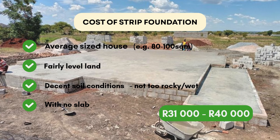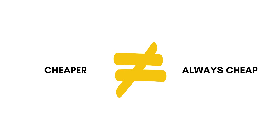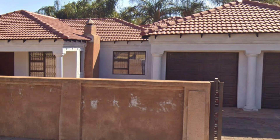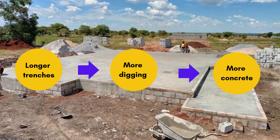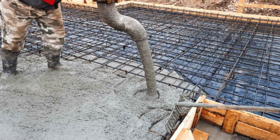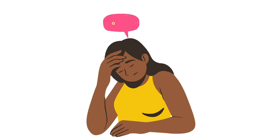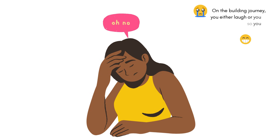With a strip foundation, if your soil is good and your house is light and not too big, it can be all you need. But cheaper doesn't always mean cheap. A strip foundation can become expensive depending on the size of your house — a larger house means longer trenches, more digging, and more concrete. If the soil is unstable you might need to dig deeper or reinforce the trenches, and adding a slab increases cost significantly because a slab needs a lot more concrete, and ready-mix concrete can be very expensive.